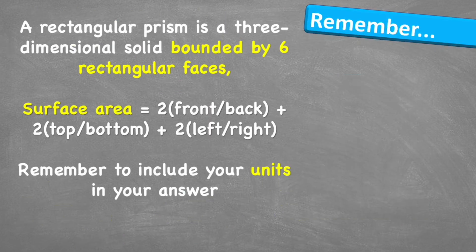Okay, let's look at what to remember. First of all, a rectangular prism is a three-dimensional solid bound by six rectangular faces. The surface area is equivalent to saying two frontal backs, added to two top and bottoms, added to two left and rights. And we must remember to include our units in our answers.